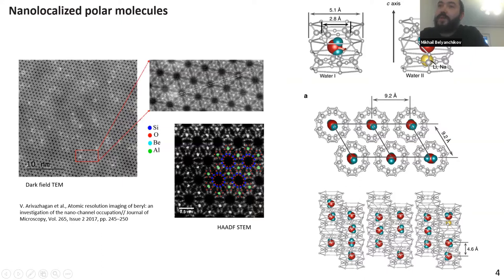The localization can be of two types. The first type, we call it water one, when the single water molecules localized in nanocage and can freely rotate. And the water two type, when water molecules is strongly coordinated by the ion in the bottleneck, so it's almost completely fixed and cannot rotate. In this way, when we have this beryl crystal with nanolocalized polar molecules, effectively we have the triangle lattice of freely rotating and interacting dipoles.